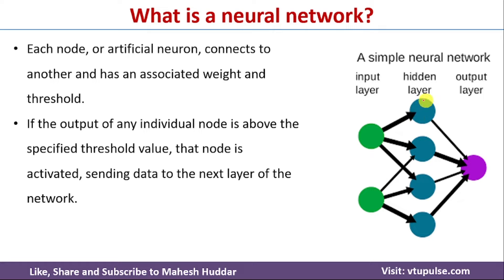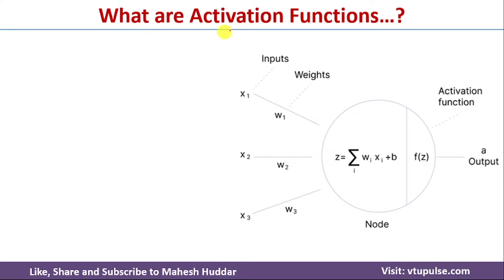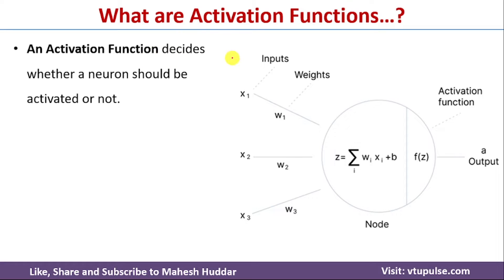The output of a particular neuron is activated based on some threshold value. If the computation unit value is greater than the threshold, the neuron is activated. If it is less than the threshold value, it will not be activated. So the question is: what are activation functions? Whenever we want to make sure that a particular neuron is active or not, we need to use an activation function.